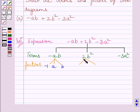Now, similarly, 2B squared is a product of 2, B, and B. So, its factors are 2, B, and B.